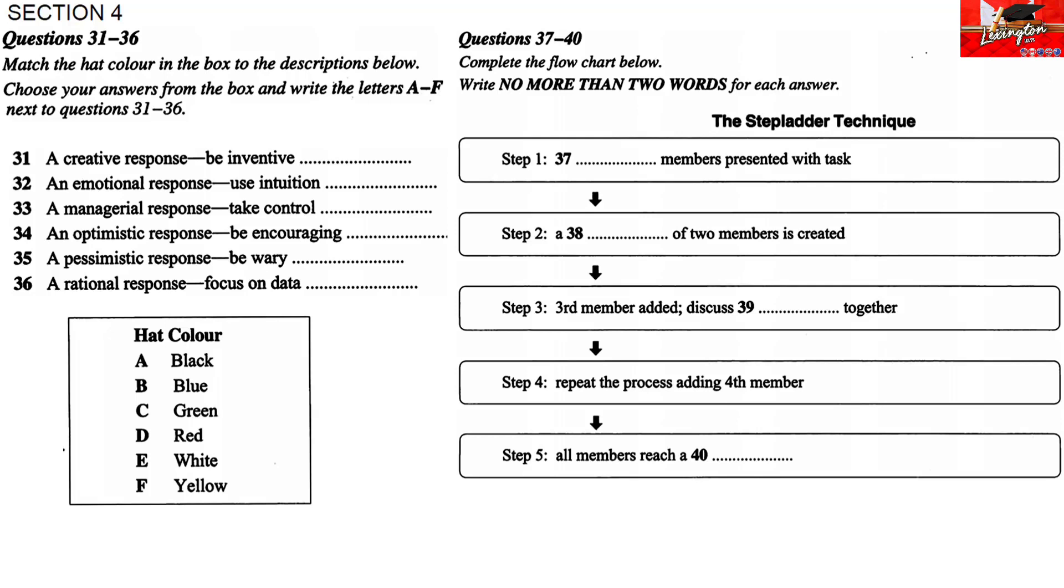The opposite viewpoint, of course, comes with the yellow hat. It helps you to continue when the outlook is gloomy or the problems seem insurmountable. Think positively and you'll see all the advantages and values of the decision and all the opportunities it brings.